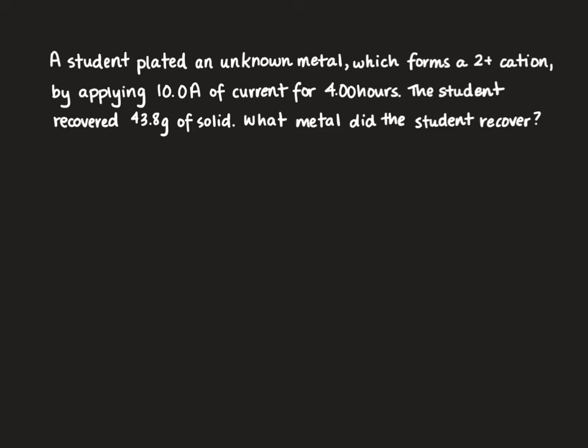To start, we're going to write our half reaction. We don't know the identity of the metal so we'll use the letter M. It's a 2+ ion which means it's going to gain two electrons to form the solid metal: M²⁺ + 2e⁻ → M(s). We have a 2 to 1 mole ratio.